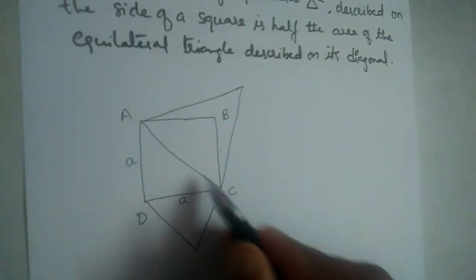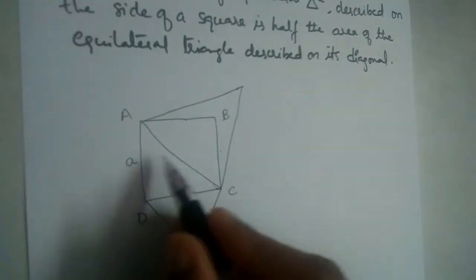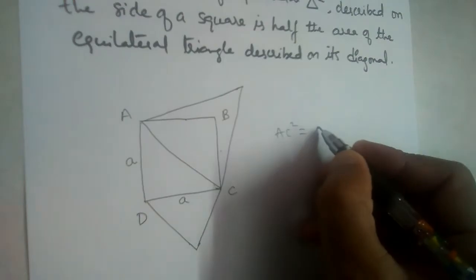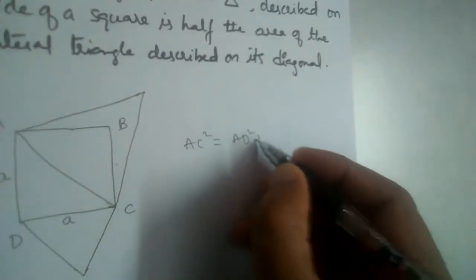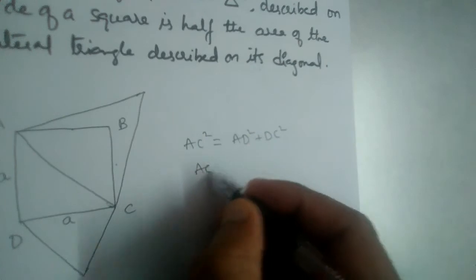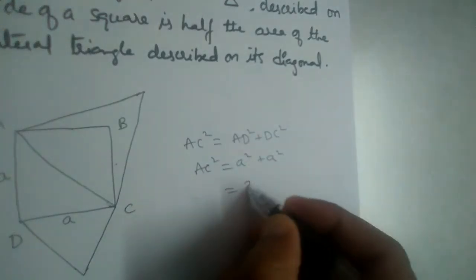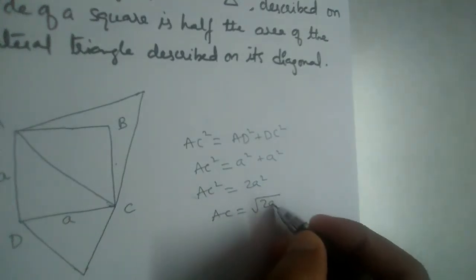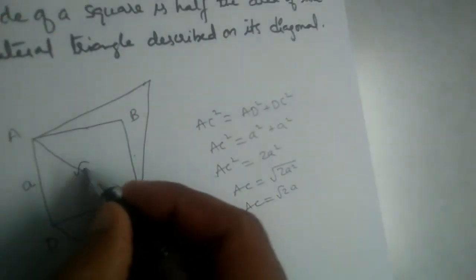What will AC be? If we apply the Pythagoras theorem, AC² = AD² + DC², which gives AC² = A² + A² = 2A². Therefore, AC = √2·A.